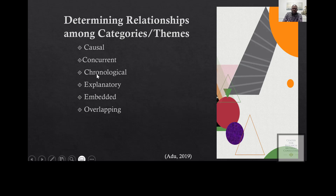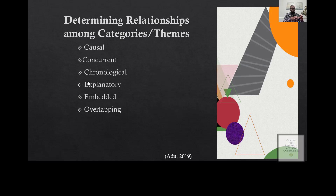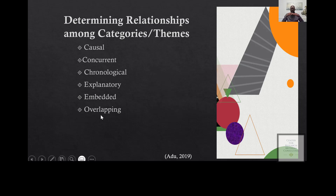The second is concurrent relationship — are the themes happening at the same time? Chronological relationship — does one theme come before the other in a sequential manner? Explanatory relationship — does one thing explain the other? Embedded relationship — does a theme embed itself within another, where one might be a dominant theme and the other falls under it? And overlap — do they share something in common?